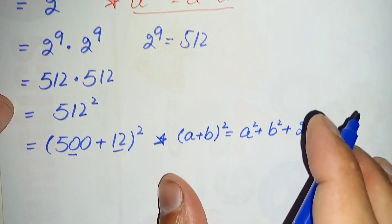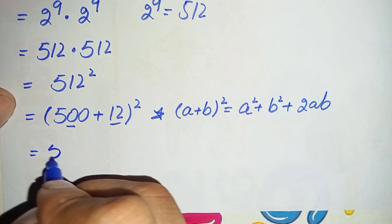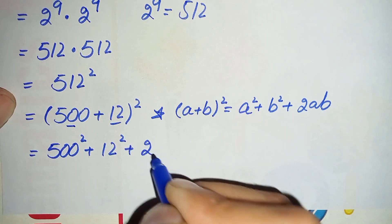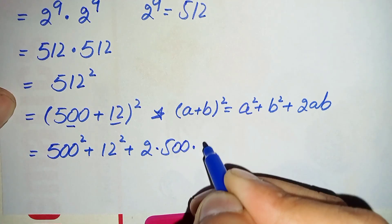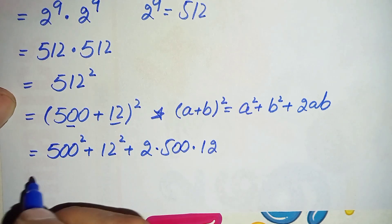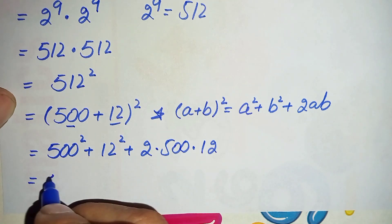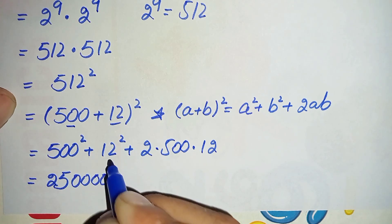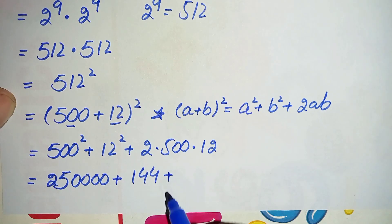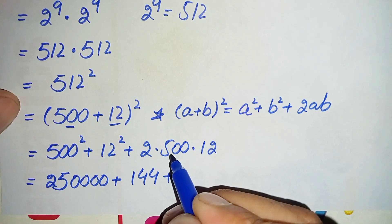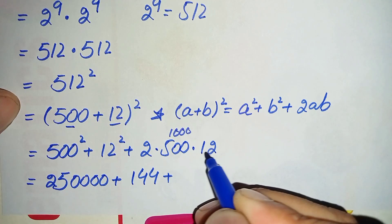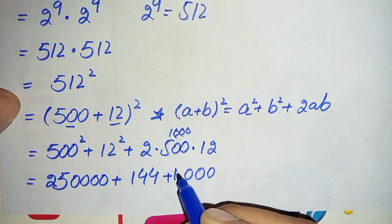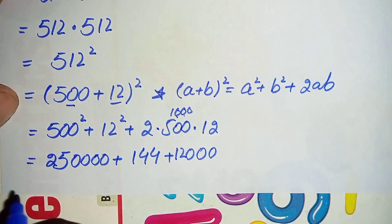We use the identity (a + b)² = a² + b² + 2ab, where a is 500 and b is 12. This becomes 500 squared plus 12 squared plus 2 times 500 times 12. So: 500 squared is 250000, 12 squared is 144, and 2 times 500 times 12 is 12000.